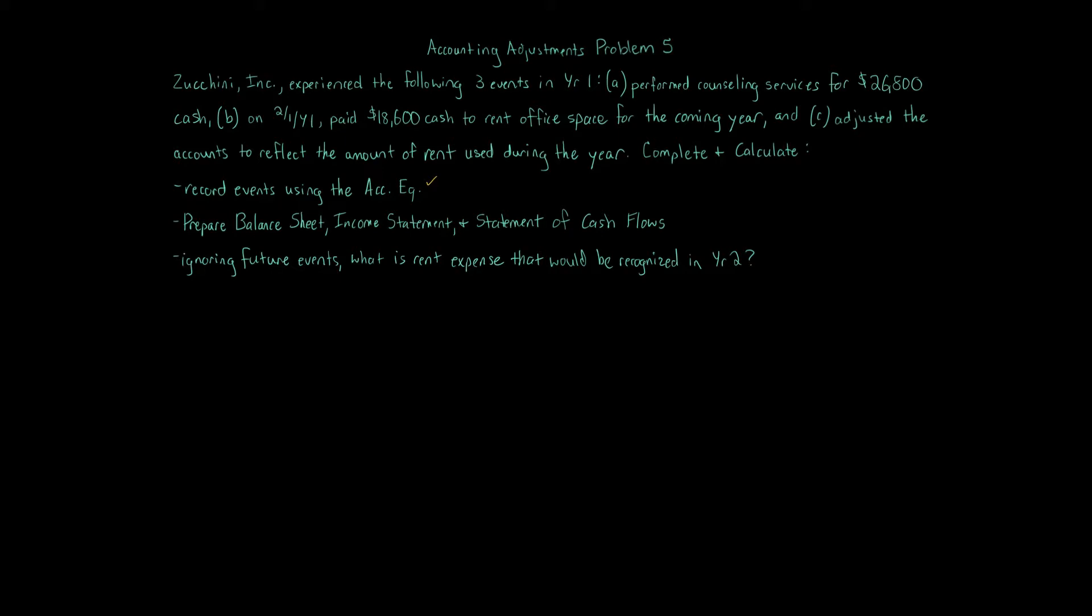Of course, in our accounting equation, we've got assets equals liabilities plus equity. Now looking at the specific accounts, we have three transactions A, B, and C. The accounts involved for assets, we're going to have cash, and we're also going to have prepaid rent. This is going to deal with prepaid expenses.